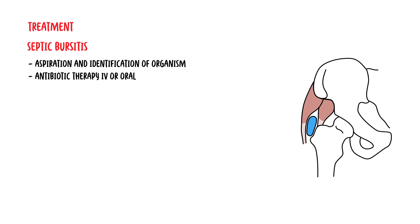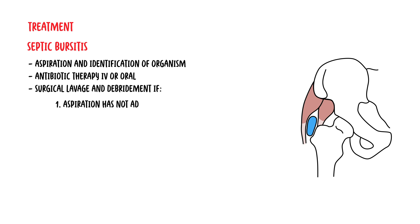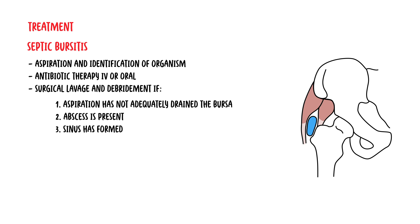Other options, if not responding well to these treatments, include surgical lavage and debridement. This is mainly indicated if aspiration has not completely drained the bursa, there is an abscess present, or a sinus has formed.